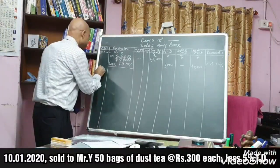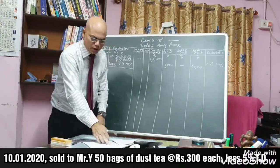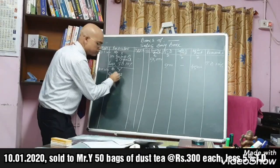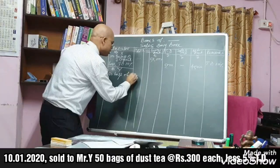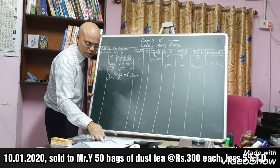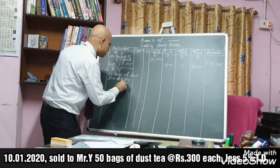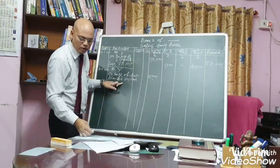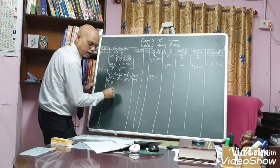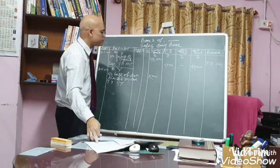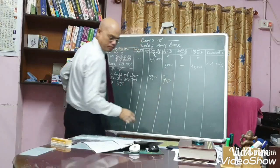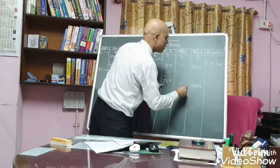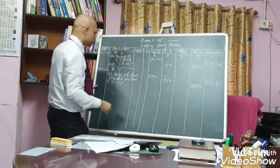Number two: suppose on 10th January 2020, sold to Mr. Y — 50 bags of dust tea at the rate of rupees 300 each. Therefore 50 × 300 = 15,000 as the gross amount. Trade discount is given at 5%, so 750 rupees is the trade discount, and net amount will be 15,000 minus 750, that is 14,250. In the remarks column, write trade discount 5%.